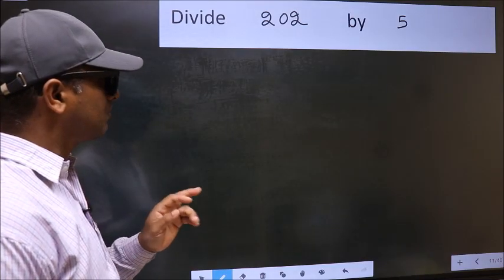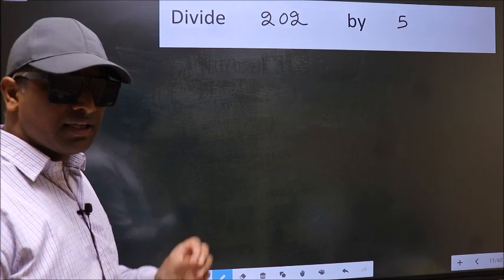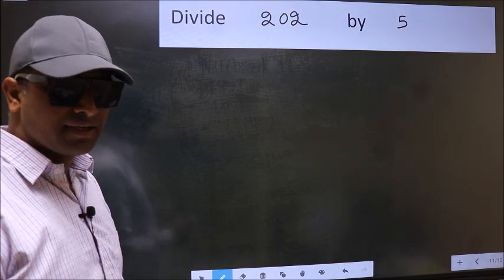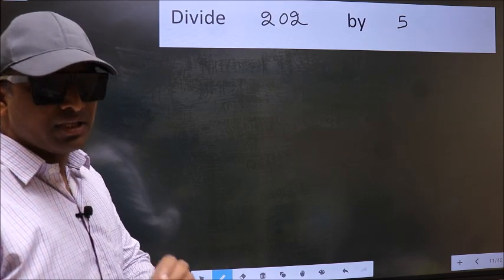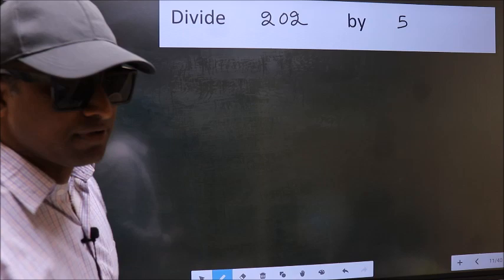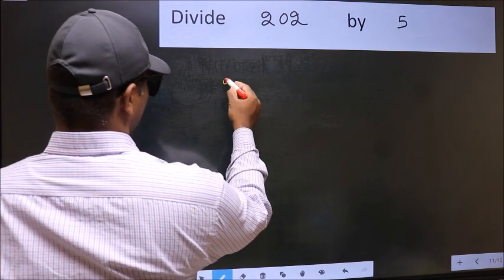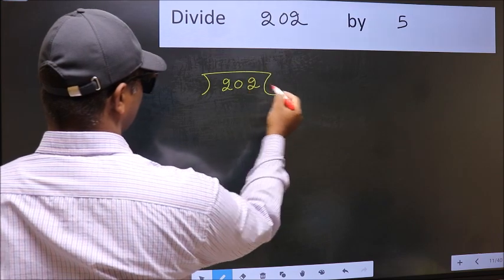Divide 202 by 5. While doing this division, many do this mistake. What is the mistake that they do? I will let you know. But before that, we should frame it in this way. 202 and 5 here.